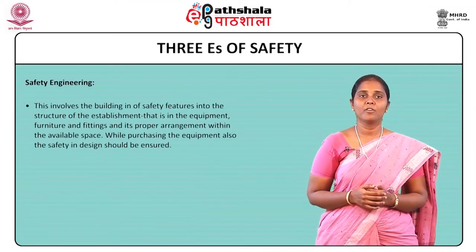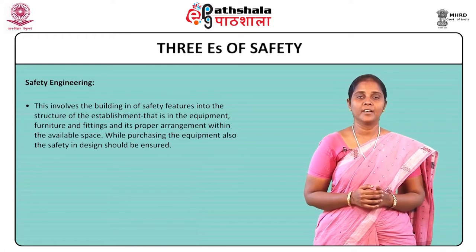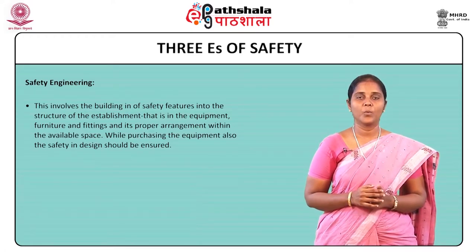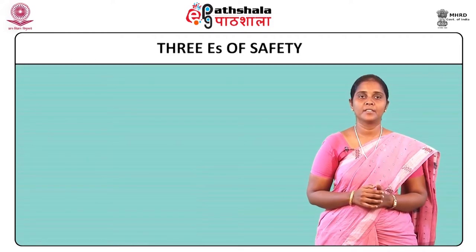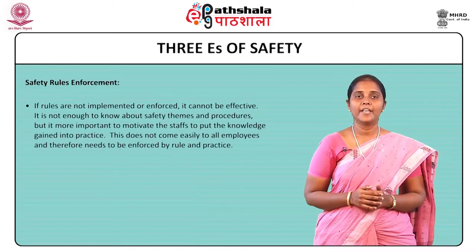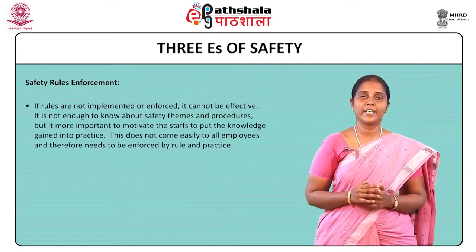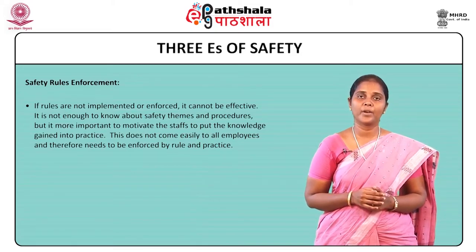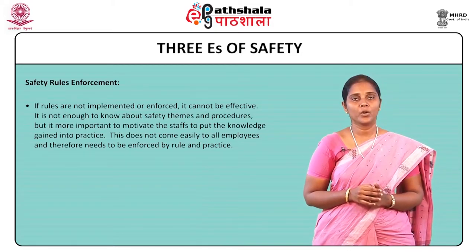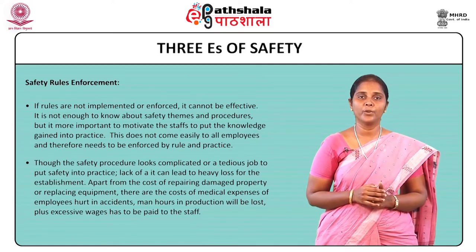Training should also include demonstrating the use of safety equipment installed in the establishment and the location and use of first aid materials, instilling in people the ability to recognize signs of hazards, and teaching the legal implications of non-adherence to safety procedures. The second E is safety engineering, which involves building sufficient safety features into the structure of the establishment — in the equipment, furniture, fittings, and their proper arrangement within available space, and ensuring safety in design when purchasing equipment. The third E is safety rules enforcement. If rules are not implemented or enforced, they cannot be effective.